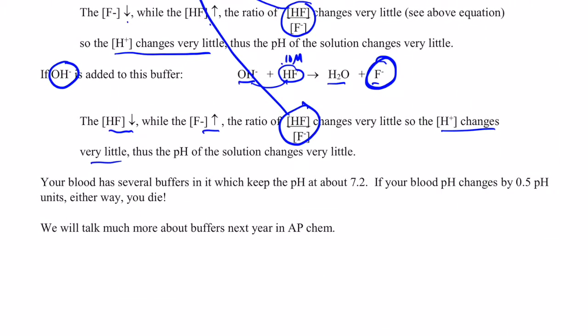Now, it's important to remember that buffers play a very important role in living systems. For example, the pH of your blood is about 7.2. It turns out if your blood pH changes by a half of a pH unit, either up or down, you die. You learn in your biology classes that enzymes are made out of proteins, and enzymes catalyze many reactions in your body, and the shape of those enzymes are changed dramatically by changes in pH.